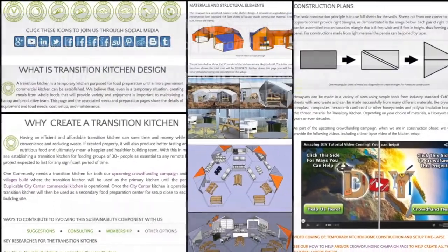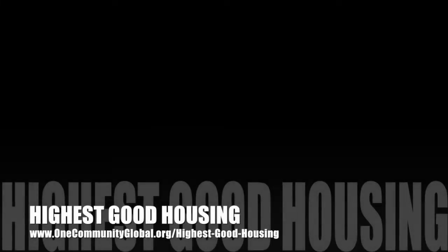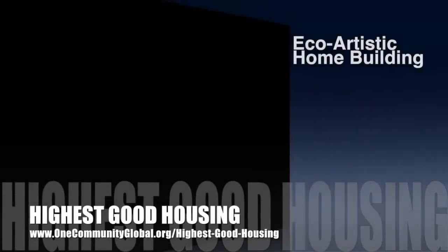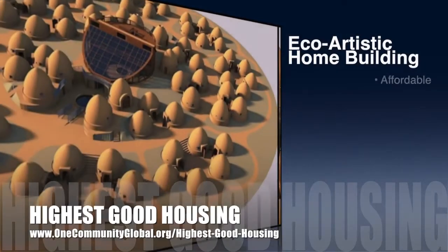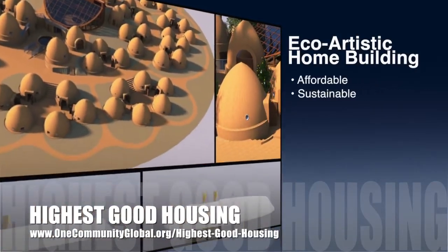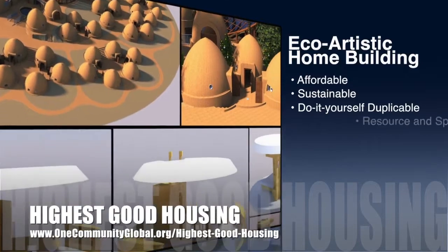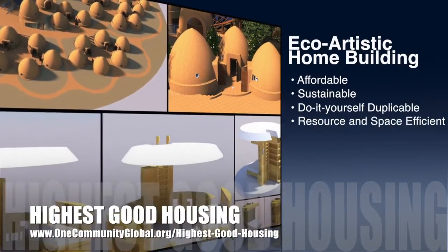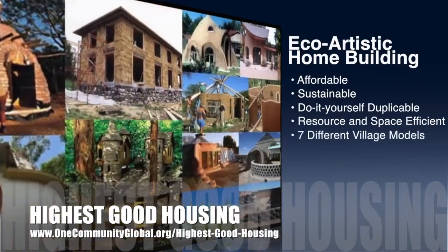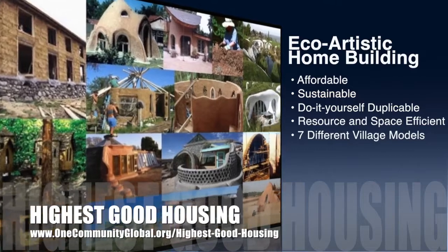One Community's approach to highest good housing is eco-artistic home building that is affordable, sustainable, do-it-yourself, duplicable, resource and space efficient, and consists of seven different sustainably constructed village models.